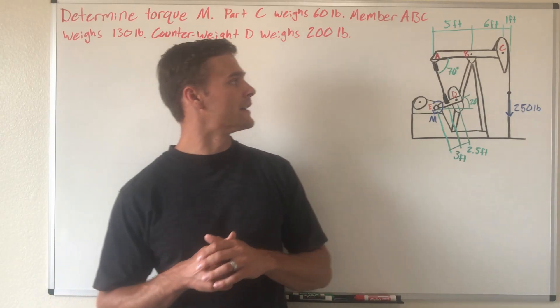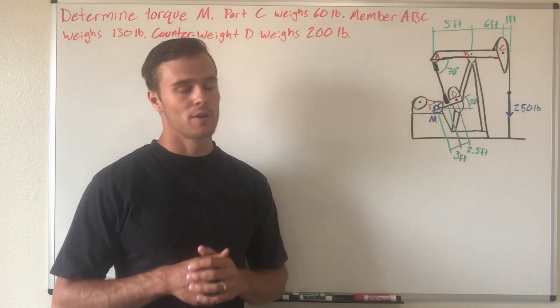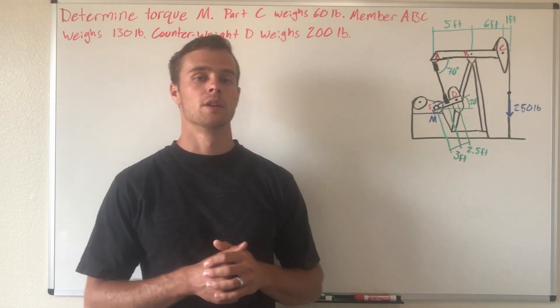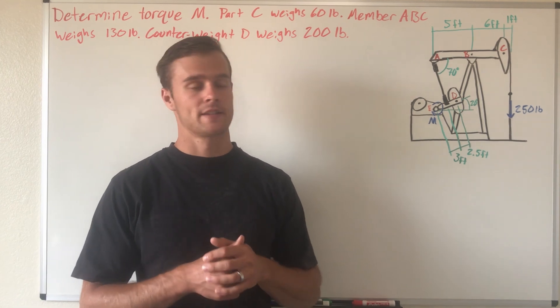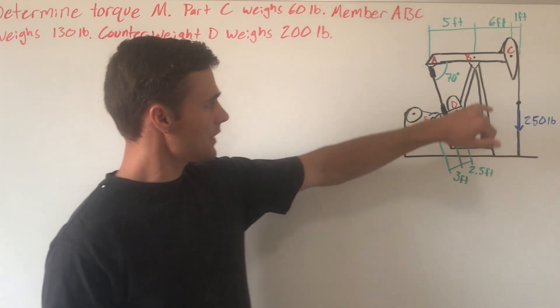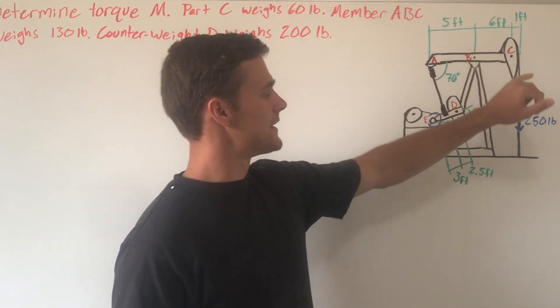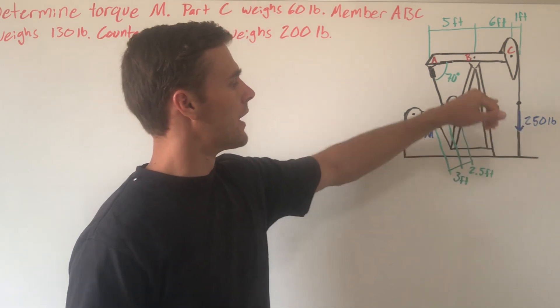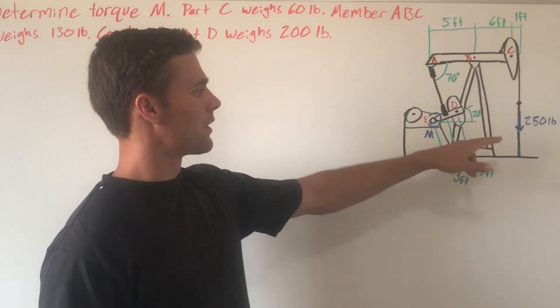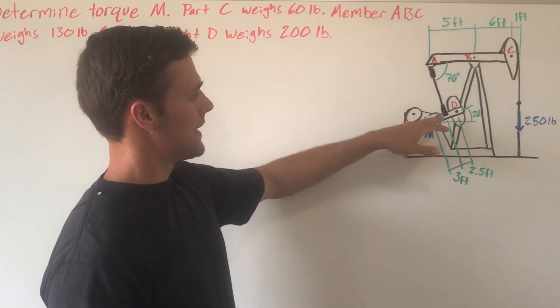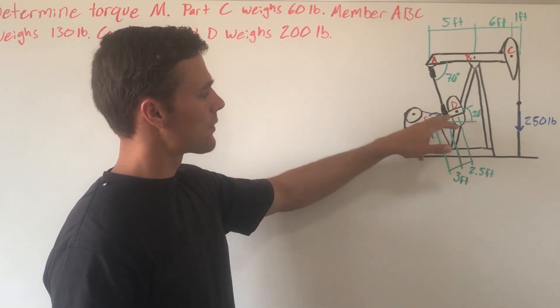First, we need to see which members we're going to draw free body diagrams of and which ones we'll leave as a system. The ones that really matter are this arm ABC, this rod and cable pulling up with 250 pounds of force, this member going from point A to the arm of the counterweight, and the counterweight itself with its arm going to point E.